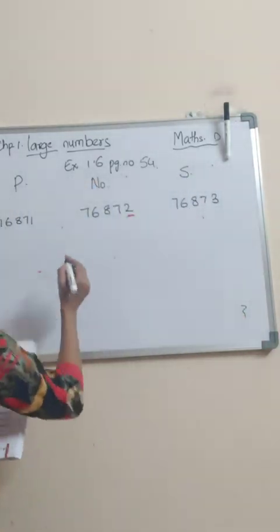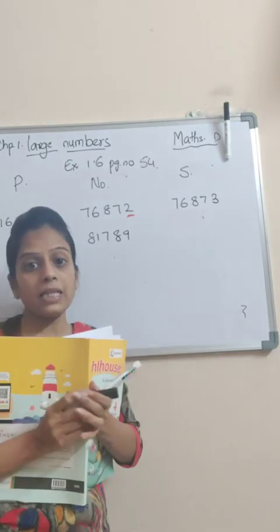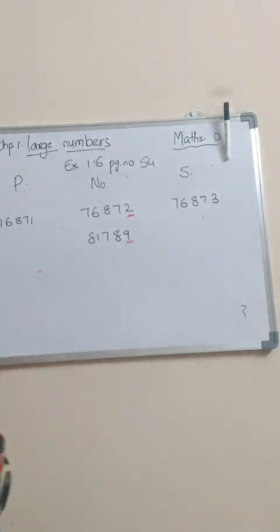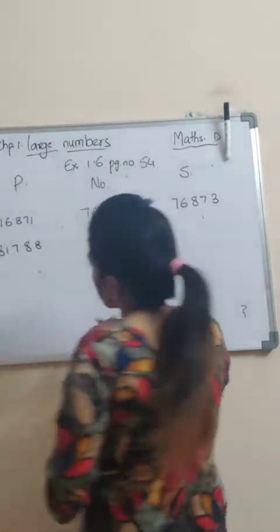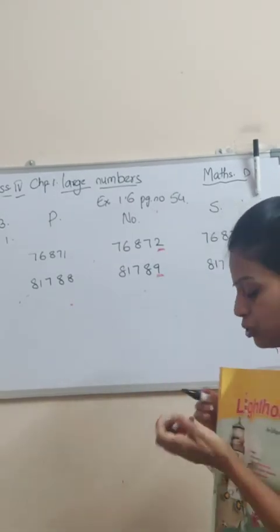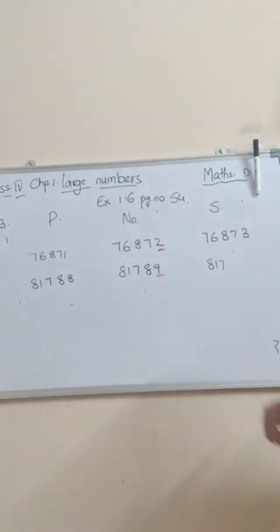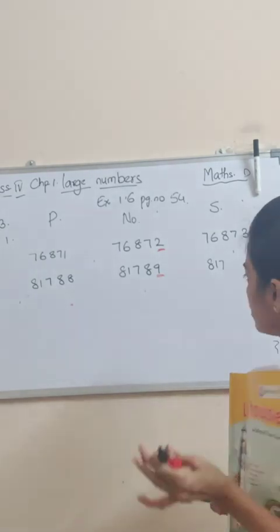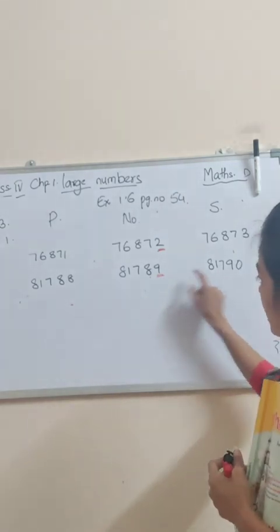Second one — the number is 81789. Now, student, you would think the ones place before 9 is 8, but what comes after 9 on the ones place? It would be 10, which gives a six-digit number. So for the predecessor: 81789 — ones place becomes 8. For the successor: whenever there is 9 on the ones place, 9 becomes zero and we add one to the tens place. So 8 becomes 9 and 9 becomes zero — that means 81789's successor is 81790. 89 ke baad kya aata hai? 90.